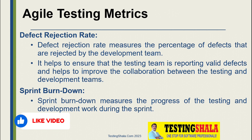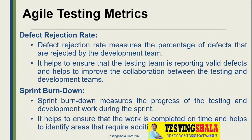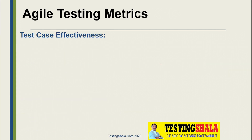The next metric is sprint burn down, which is a key thing in agile. Sprint burn down measures the overall progress of testing and development work within a given sprint. If things are going as per plan, that is good. Otherwise we have to tweak our overall efforts in testing and development to ensure we fix and deliver things on time using the sprint burn down chart.